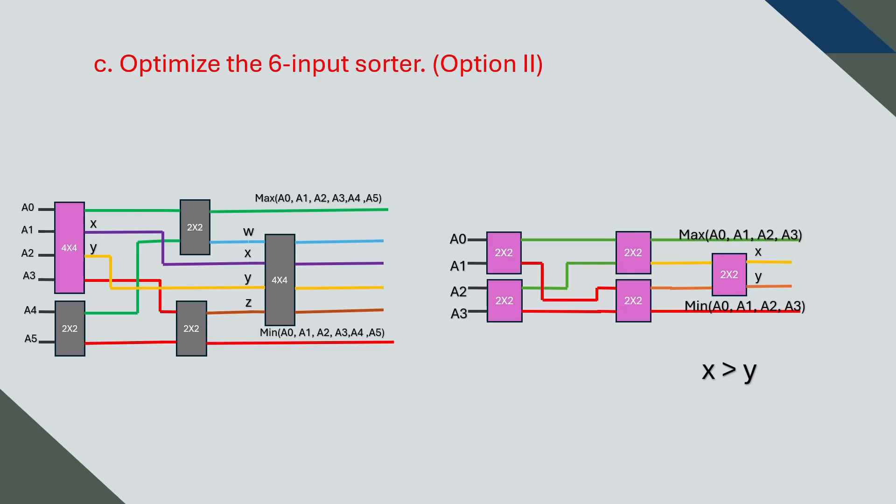Looking at the outputs x and y, we already know that x is greater than y based on the way the sorter operates. But here's a key insight: x and y are fed again into the next four-on-four sorting unit later on. Therefore, we don't need to determine their relative order at this stage. The comparison will be handled later in the process.